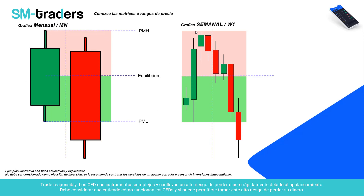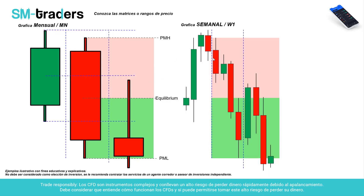Trasladando este ejemplo a una gráfica semanal, tenemos el máximo y el mínimo del mes anterior en cuatro velas semanales. Fíjense cómo el precio, inmediatamente desde zonas premium, empieza a buscar interés de bajar. Desglosándolo un poco más, tenemos la vela mensual; el mes baja y este nuevo mes me ha generado el previous monthly high y el previous monthly low —el alto más alto del mes anterior y el bajo más bajo del mes anterior.